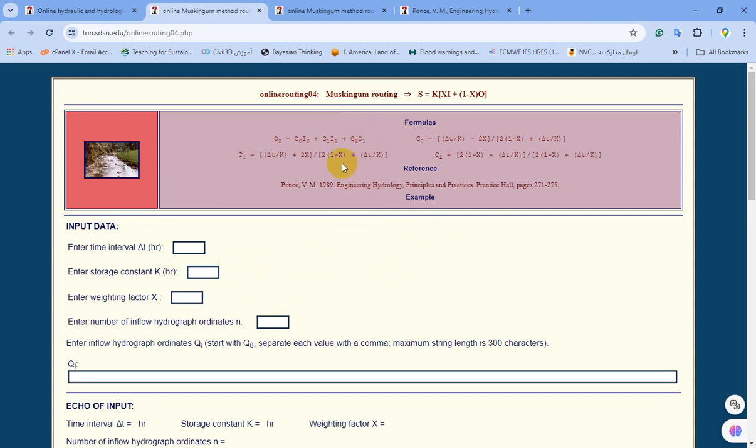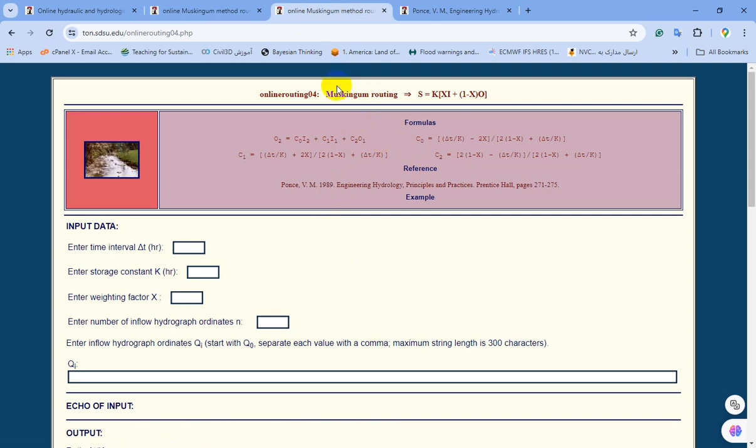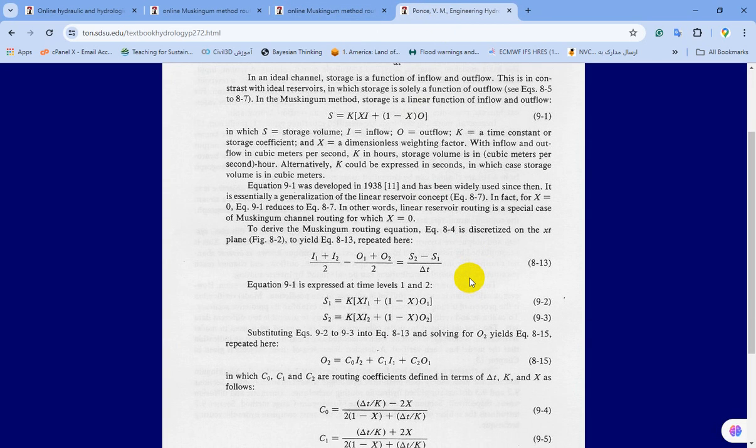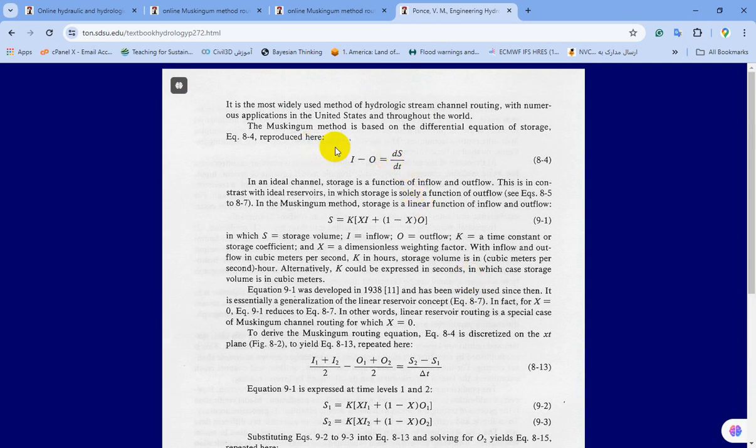Click on Muskingum and you can find this website with this information. As you know, Muskingum is one of the best and simplest methods for flood routing, especially for natural rivers. In the top section of this window, you can find more about the formulas which are used for flood routing. If you click on this link, you can find more information about this method. The Muskingum method is based on the differential equation of storage, where dS/dt equals input minus output.